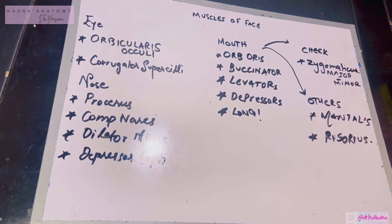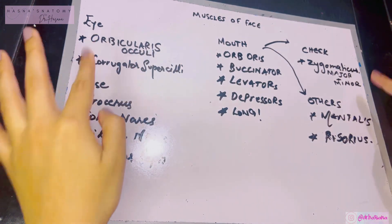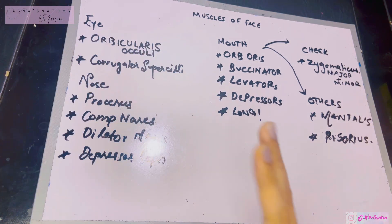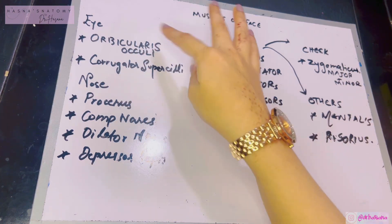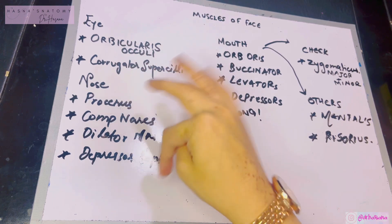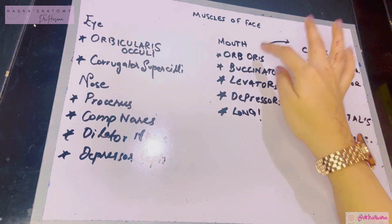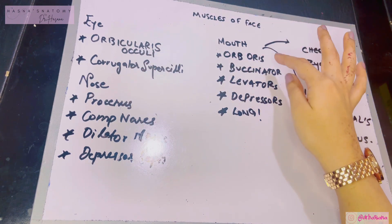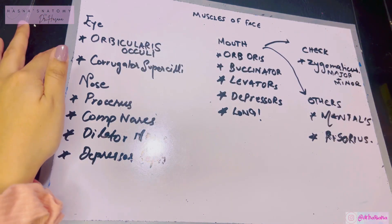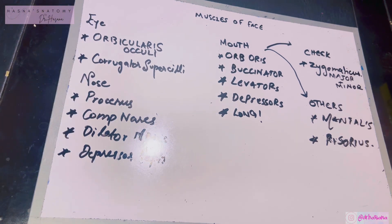Overall, your face has three openings that all of these muscles are supposed to protect. The first opening is the eye, or the palpebral fissure, that lies around the orbits. The second is the nose — the nasal openings. And the third is the mouth — the oral fissure. These muscles are going to surround these various openings. Let's talk about the first opening, which is the eye.